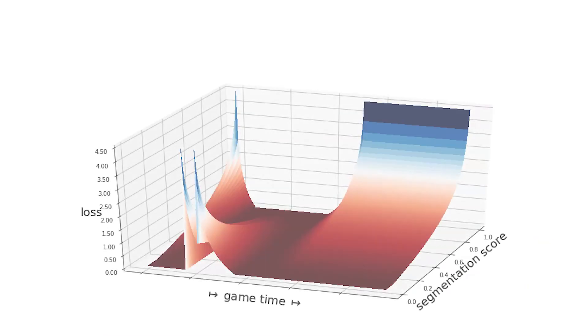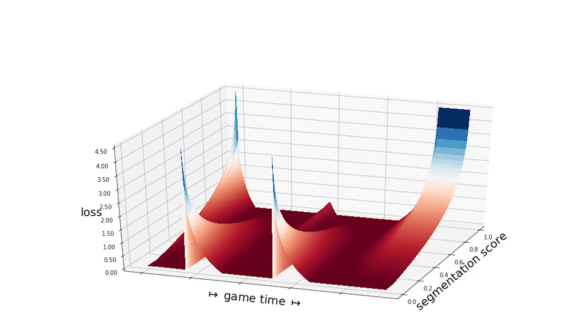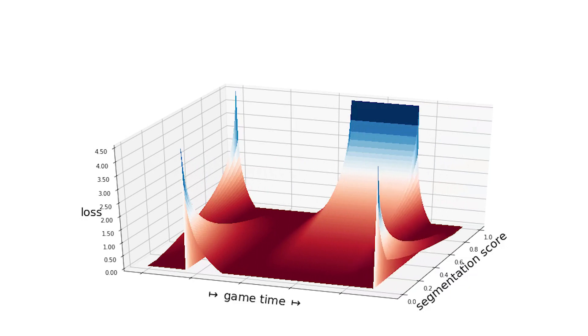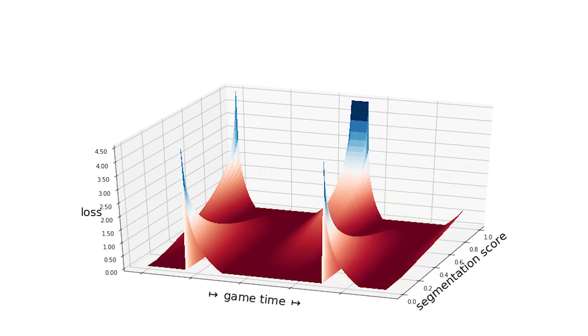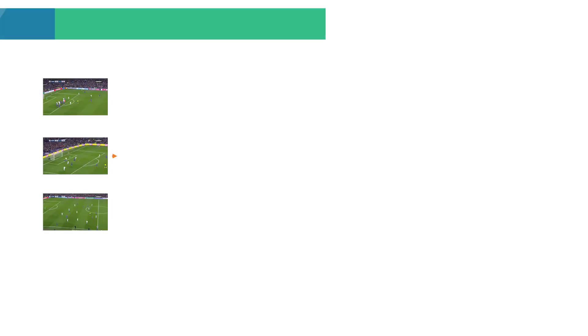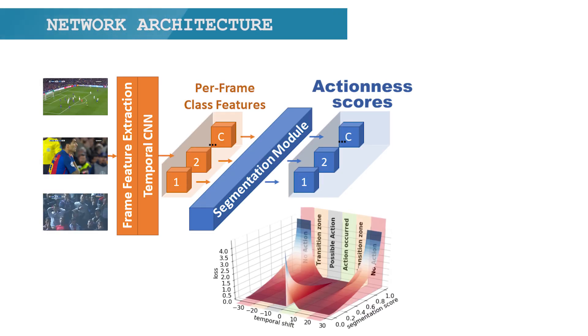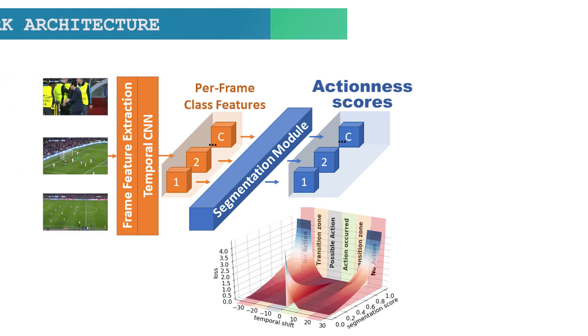But what happens when several actions of a class occur during a video — for example, several goals? The time shift encoding for frames located between two actions is roughly the time shift from their closest action, possibly adjusted so that the loss is smooth. Here is where we are so far: the network takes videos as input and gives, for each class, an actionless prediction score for each frame. This means we still need to perform the action spotting — our target task.